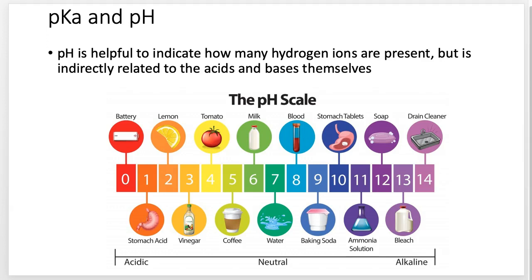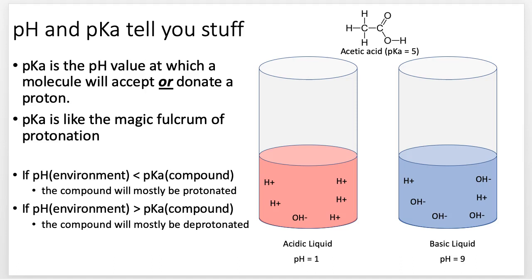Let's talk about the practicality of pH and pKa together. pKa is a specific number that tells us whether an acid, base, or molecule is going to give up its hydrogen ion — which sometimes we want, sometimes we don't. The pH tells us how many hydrogen ions are in the environment. If it's really low, there's a ton of hydrogen ions around. So why would an acid give up its hydrogen if there are already lots of hydrogen ions? That's where pKa and pH come together.